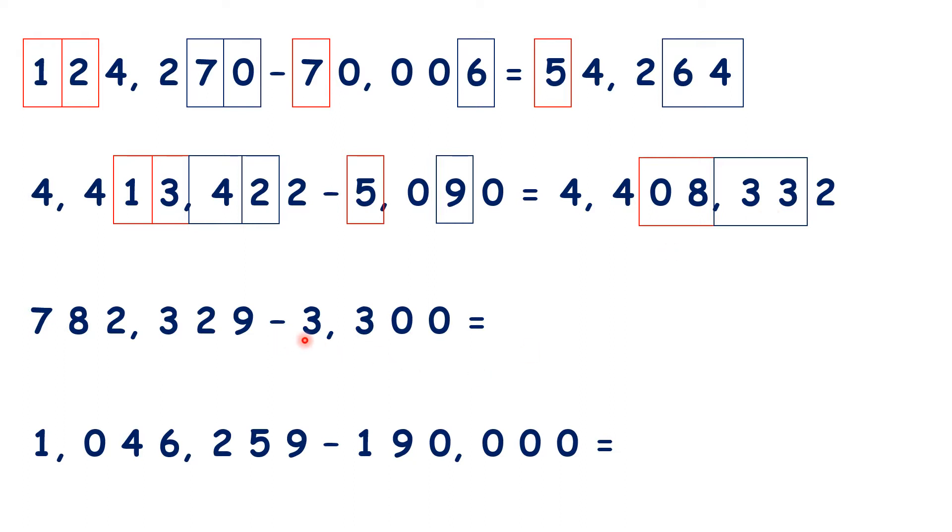Now here, we're subtracting 3 thousands, but our ten thousands will also need to change, and then we're subtracting our three hundreds. So what is our answer? We have 779,029, because we subtracted 3 from 82 to get 79, then subtracted our three hundreds, so we have 0 in the hundreds.